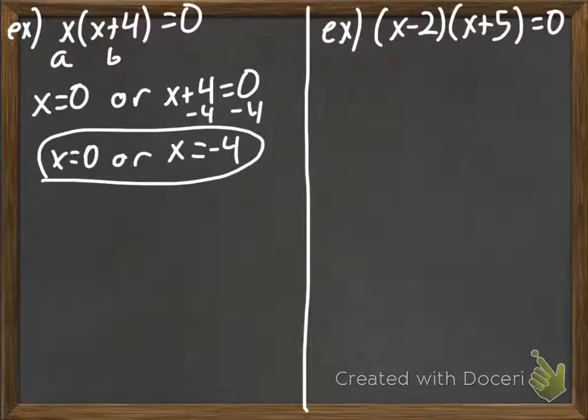And, if you notice, we're still going to have two answers. Because, if you remember, these are quadratics. And our quadratics always have two answers. So, even though it doesn't look like it, this is a different form of our quadratic.